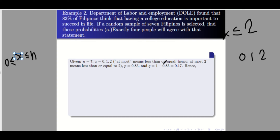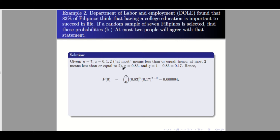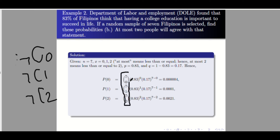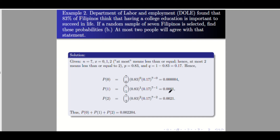Our p and q are still fixed: 0.83 and 0.17. We will compute three probabilities: P(0), P(1), and P(2), using 7C0, 7C1, and 7C2 respectively. Substituting and using your calculator, you will arrive at the values — using four decimal places, with 0.000 for the first one. Adding the three probabilities: P(0) + P(1) + P(2) equals 0.002204.